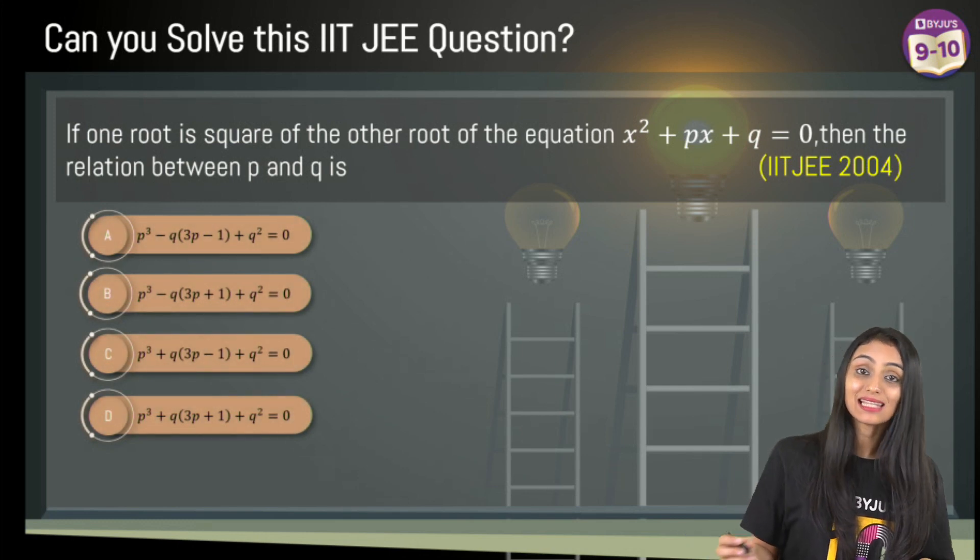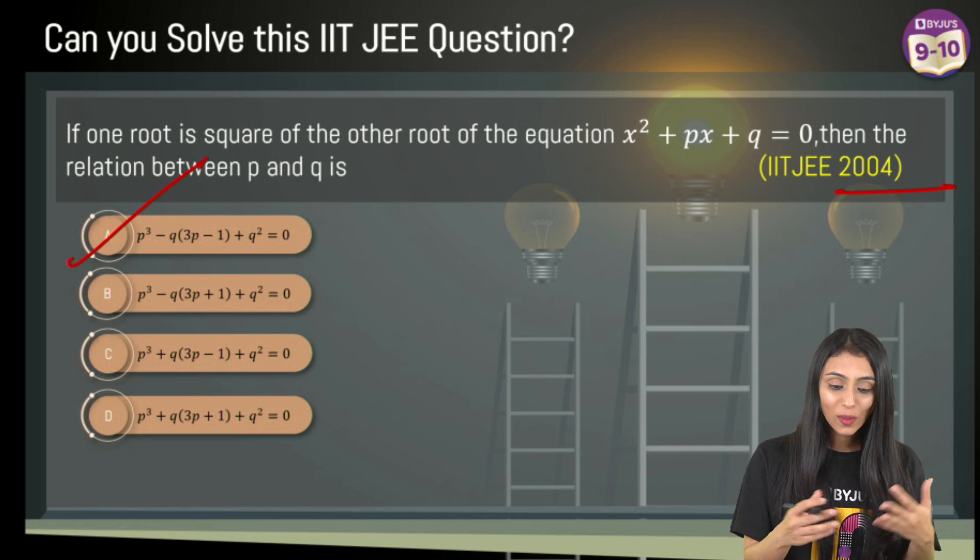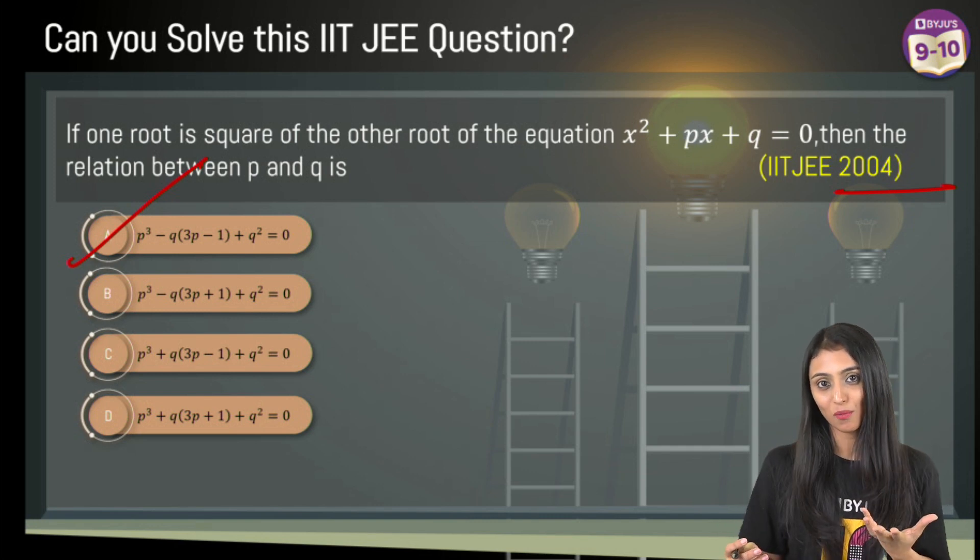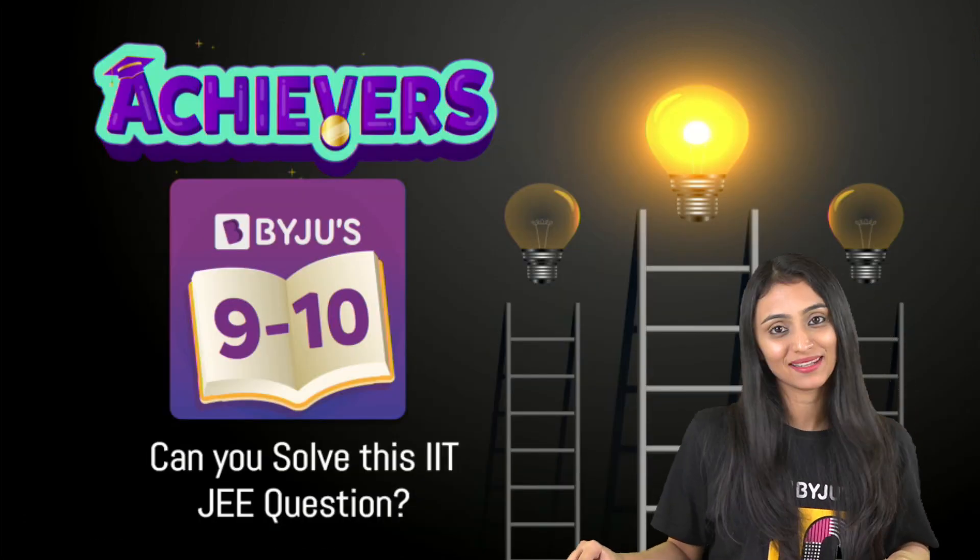This is actually our option A, so option A is the right answer. See how simply we solved this? Though it's an IIT JEE question, just by making use of basic polynomial concepts we could solve it. Do leave a comment for me in the comment section about how you liked this question.